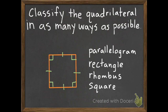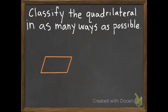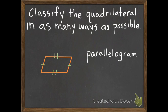Here is our second example. Can this be a parallelogram? Are the opposite sides equal? Yes. Are the opposite sides parallel? Yes. And are the opposite angles the same? Yes — so it is a parallelogram. Can it be a rectangle? It doesn't have any right angles, so no. Can it be a rhombus? No, because all four sides have to be the same, and only the opposite sides are. Can it be a square? No, because it doesn't have right angles. Can it be a trapezoid? No, because it has more than one set of parallel sides. So this shape is only a parallelogram.